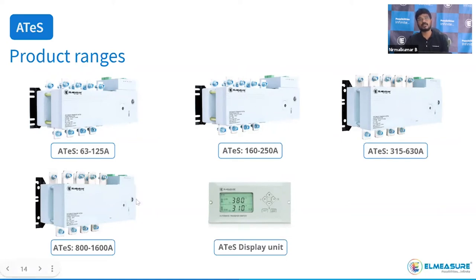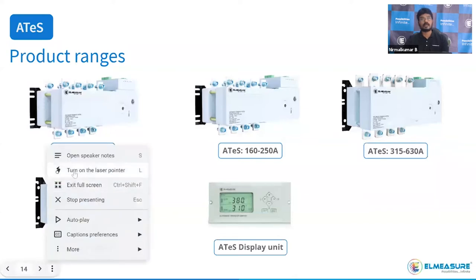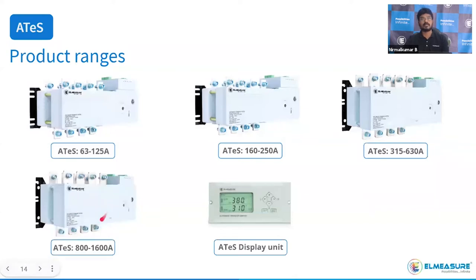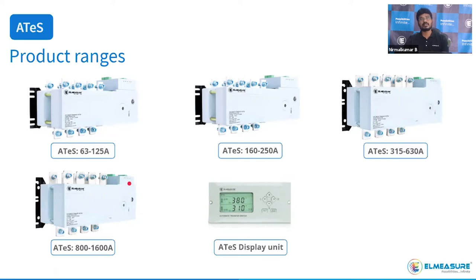This is the product look. You can see the mechanical part and the controller part. Only L-Meshire has an ATS with an inbuilt controller — no other manufacturer offers this. This controller takes care of all electrical protection and total ATS control. This is the remote display unit, an optional accessory that communicates with the ATS via RJ45 Ethernet cable.